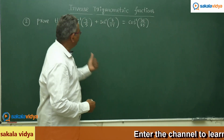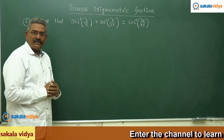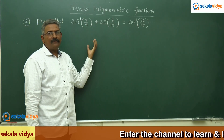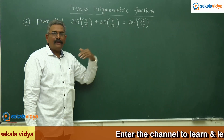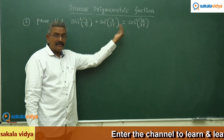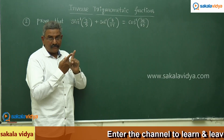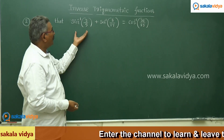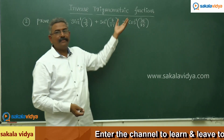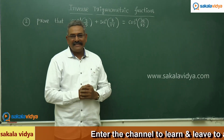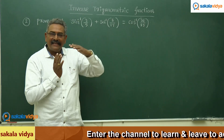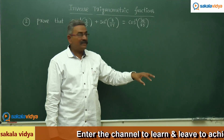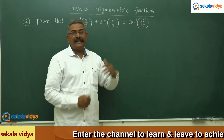In this case, if we say the first angle is alpha and the second one is beta, then alpha plus beta equals cos inverse of 36 by 85. The same problem can be restated as: cos of alpha plus beta is equal to 36 by 85.